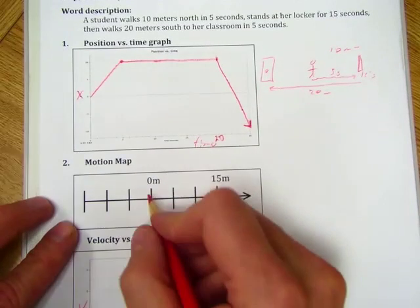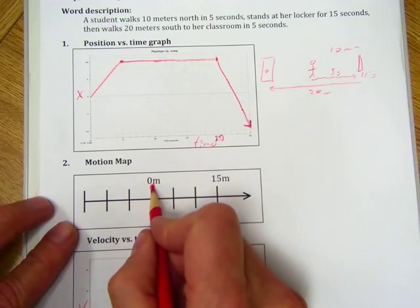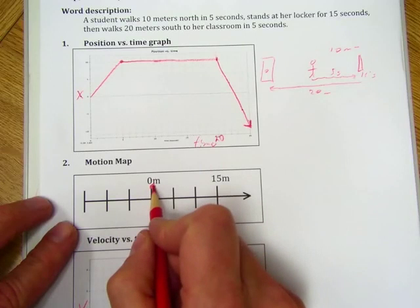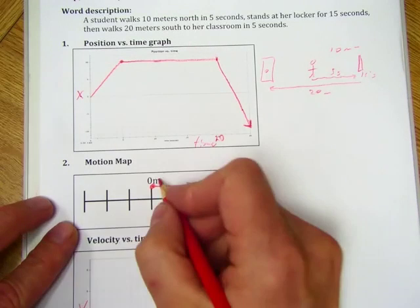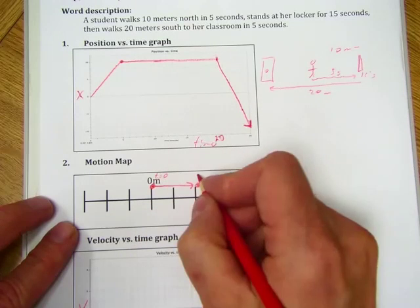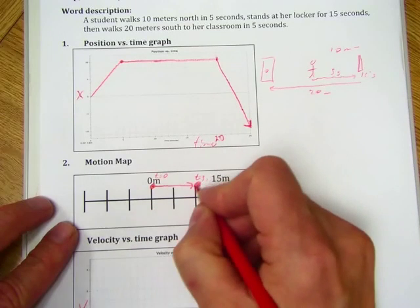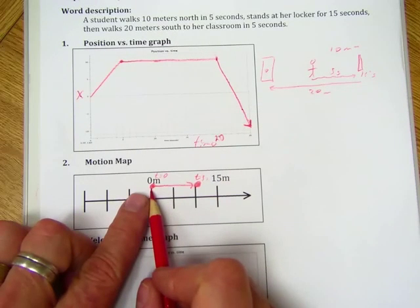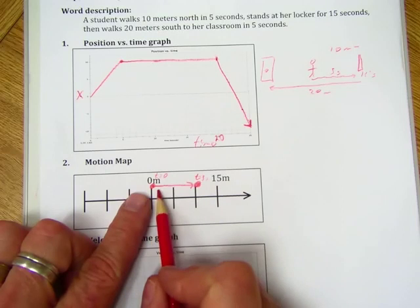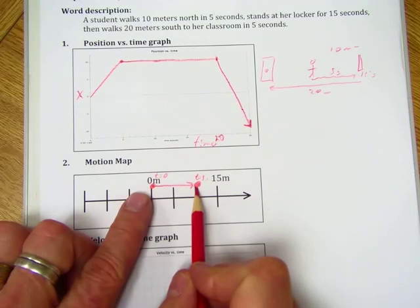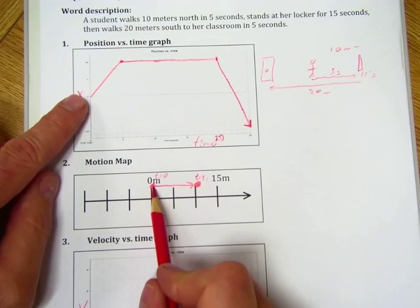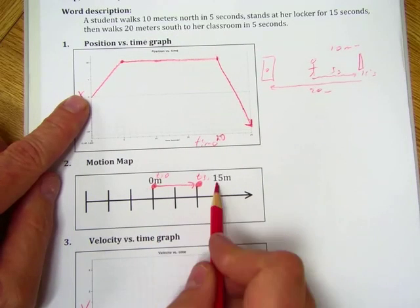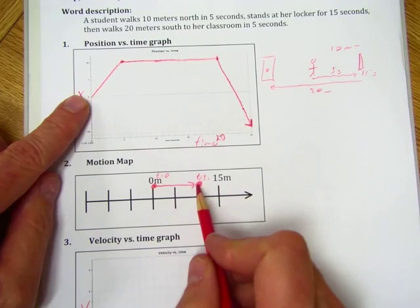So we're going to start it right here. She's going to walk 10 meters up to her classroom in 5 seconds. So this is time equals 0. This is time equals 5 seconds. Remember, whatever interval, whether it's 1 second, 2 seconds, whatever, you're simply putting a dot where she was at that time interval. She was at 0 meters, and in 5 seconds, she walked to the 15 meters, this is 5, 10 meters.